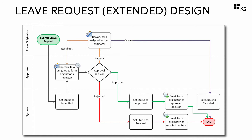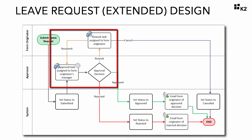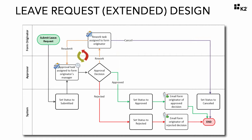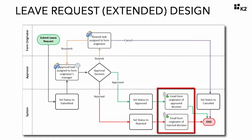Our users wanted us to add in a rework loop so that the approver can send the request back to the originator for a rework and fix any issues, rather than just outright rejecting the request. This rework loop can go as many times as needed until a request is approved, rejected, or canceled. We are also adding some additional steps in the workflow to send email notifications to the requester to let that person know their request has been approved or rejected.